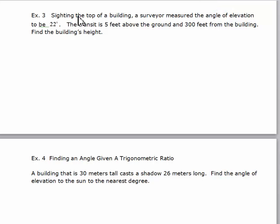Example 3 says: Sighting the top of a building, a surveyor measured the angle of elevation to be 22 degrees. The transit is 5 feet above the ground and 300 feet from the building. Find the building's height. So I first want to draw a picture to model this scenario.